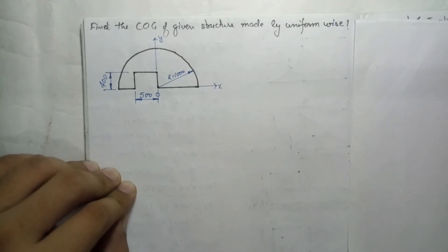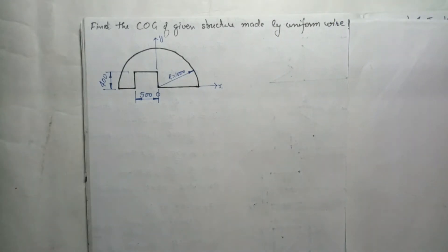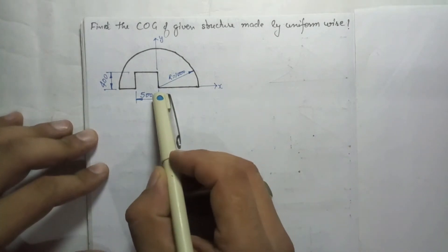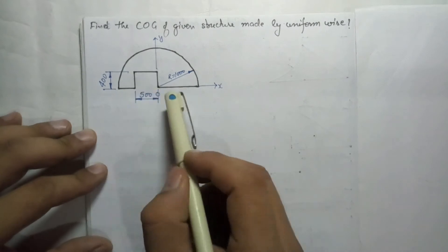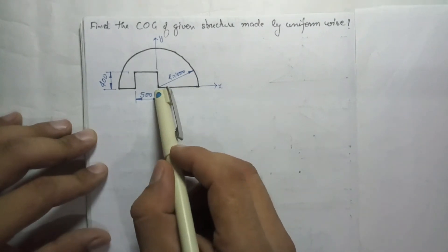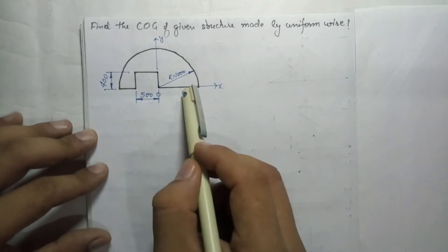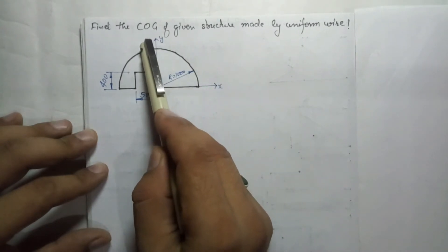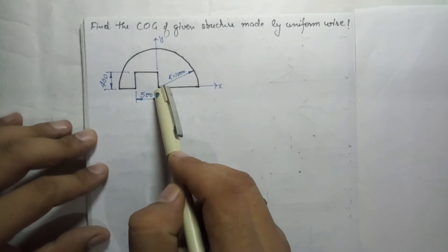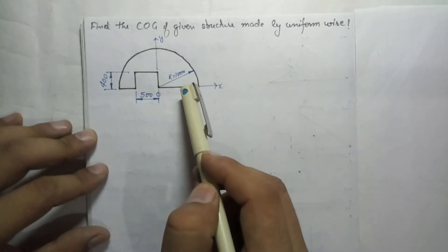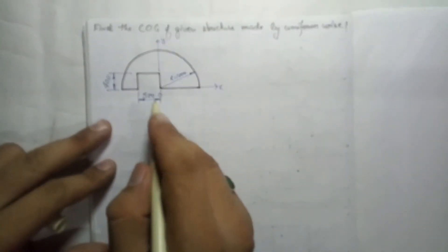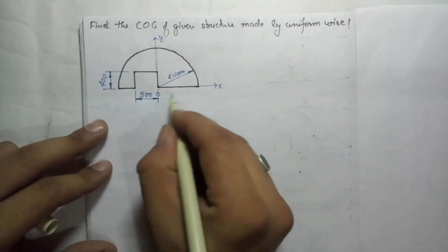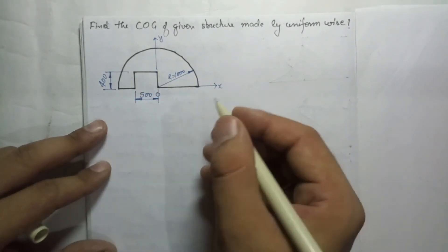We will find the center of gravity of a given structure of a uniform wire. This is not an area problem — it is a combination of wires joined together. We have to find the center of gravity, not the centroid. To do this, we divide the complete structure into a number of individual wires.